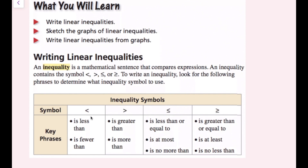One way to distinguish less than from greater than: the less than sign is pointing to the left, the greater than sign is pointing to the right. You might also see 'is fewer than' or 'is more than,' and for the less than or equal to or greater than or equal to, you'll see 'is at most,' 'is no more,' or 'is at least,' 'is no less than.' You'll get used to this as you work through some of these problems.